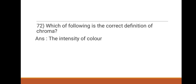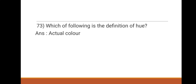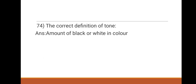Next question: which of the following is the definition of hue? Options: intensity of color, actual color, amount of white, amount of black. The answer is actual color. Next: the correct definition of tone — options: intensity of color, amount of black or white in color, actual color, contrast and brightness of color. The correct definition of tone is the amount of black or white in color.